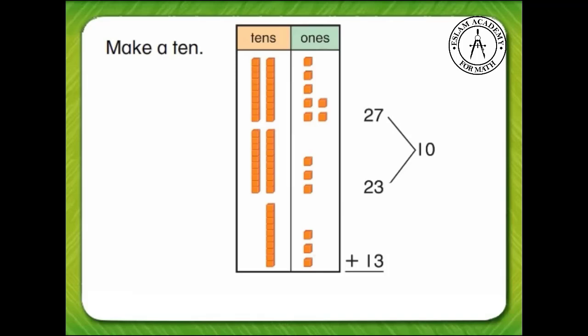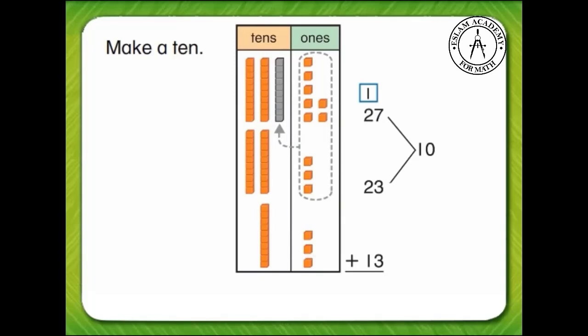That's too many, so we can regroup. Ten of the 1s is now one 10. Now our problem looks like this. We are left with three 1s, so we write 3 in the 1s place.